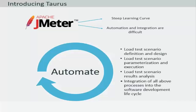When it comes to performance testing, JMeter is fantastic but not perfect. Automation and integration with other systems can be a pain and the tool itself comes with a steep learning curve. Taurus is an open source test automation tool that extends and abstracts JMeter and helps to overcome these challenges.